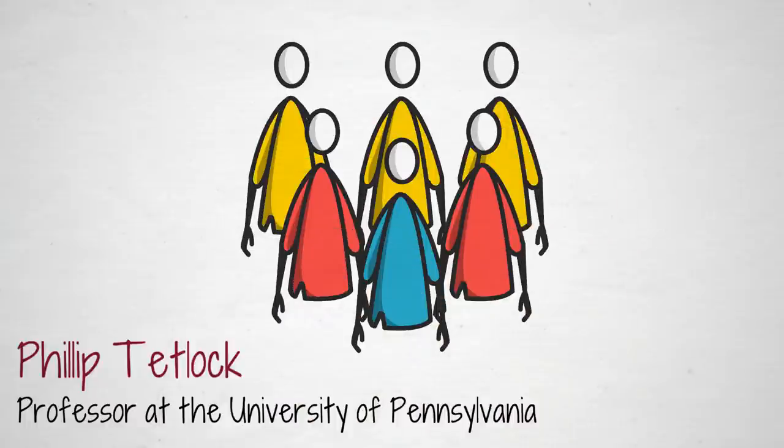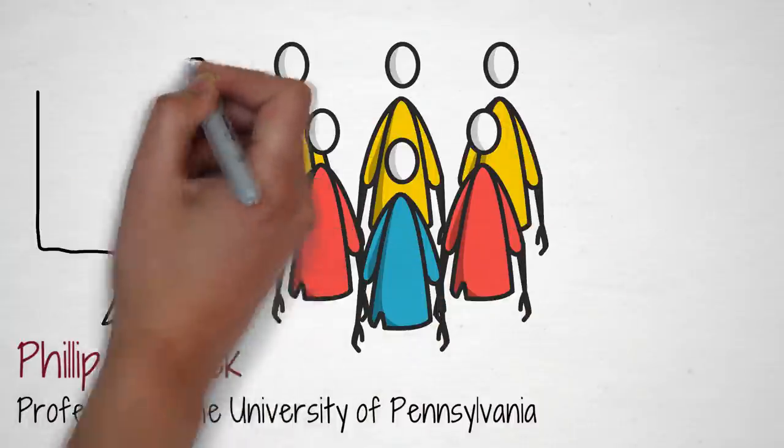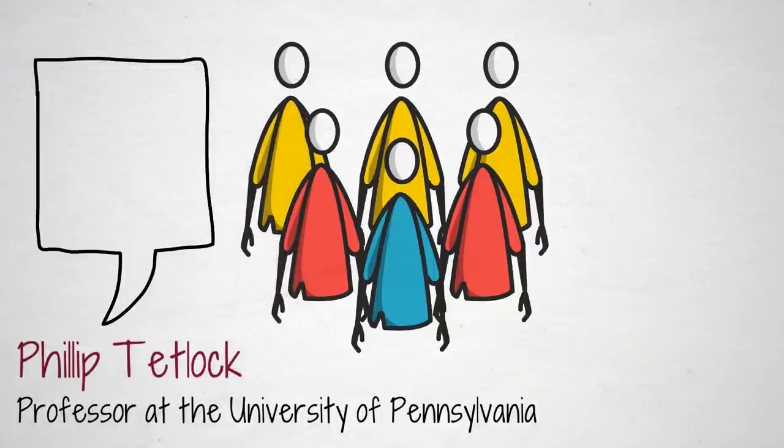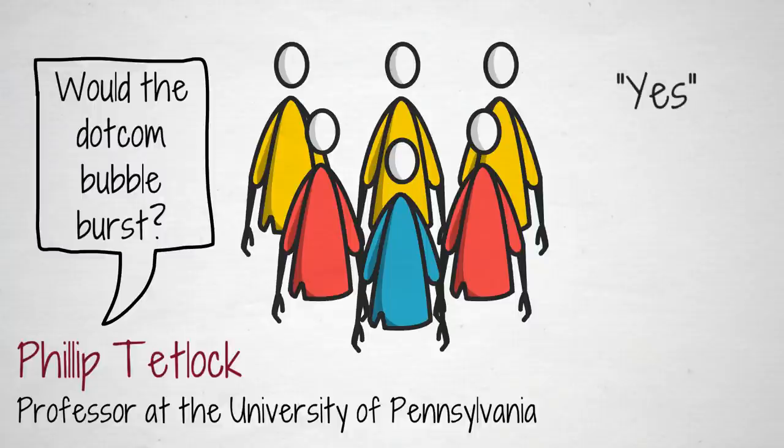During this study, Tetlock asked the experts to predict the probability of various events occurring, i.e. would the dot-com bubble burst, and then he would analyze how their thought processes came to these conclusions.